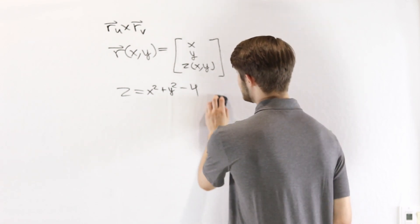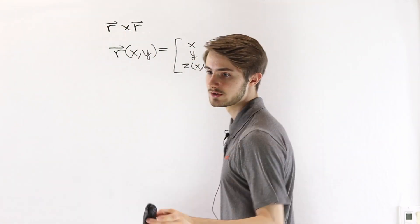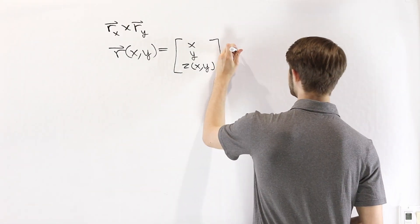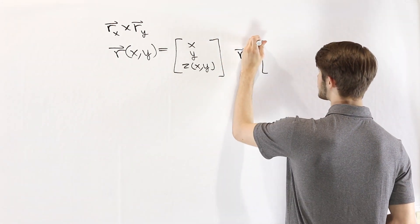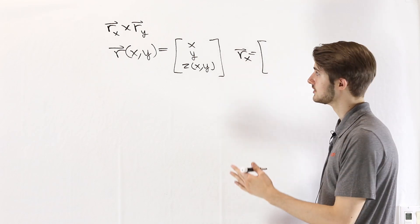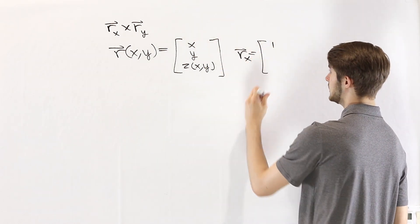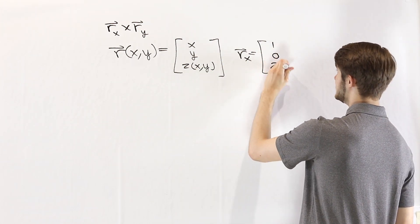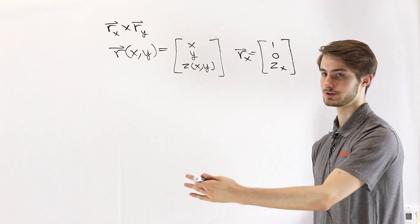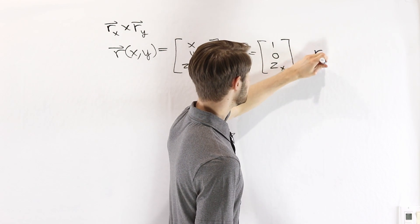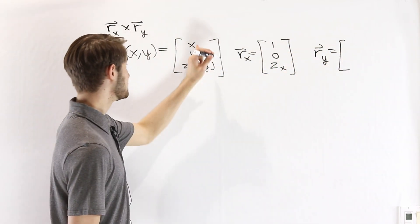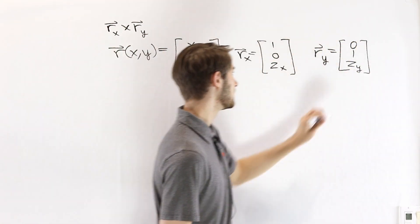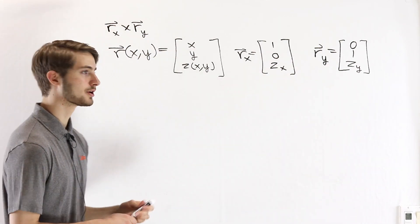From there, we want to find the cross product r_x cross r_y. We know that r_x is the partial derivative of each component with respect to x: the partial of x with respect to x is 1, partial of y with respect to x is 0, and for our function z we get z_x, the partial derivative of z with respect to x. Then r_y looks very similar: the derivative of x with respect to y is 0, of y with respect to y is 1, and then we have z_y.